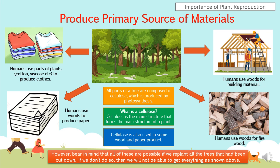So what can we get from a tree? Do you know that we can produce clothes through plants? There are parts of plants that we can use to produce clothes such as cotton, viscose, and many more — you can search Google for more information. Plants have the primary source of materials that humans need to produce clothes. And the second thing we can get from a tree is paper. Humans use wood to produce paper.